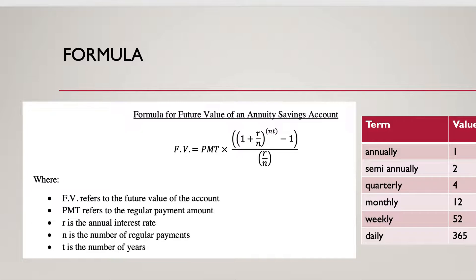PMT is the payment — that's how much money you're putting into the account on a regular basis, like $100 a month or $500 a quarter. R is your interest rate, and remember it needs to be a decimal. N is the number of payments per year. On the right side of the screen are common values: annually is 1, semi-annually is 2, quarterly is 4, and so forth.